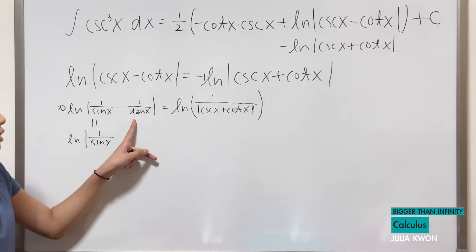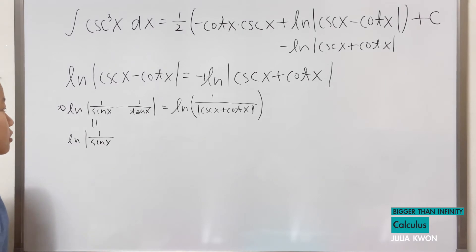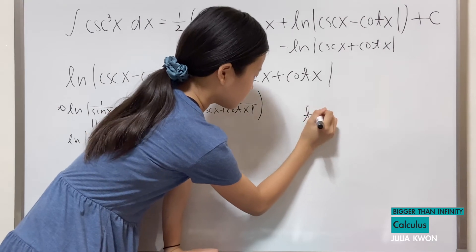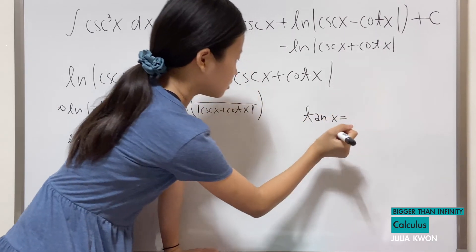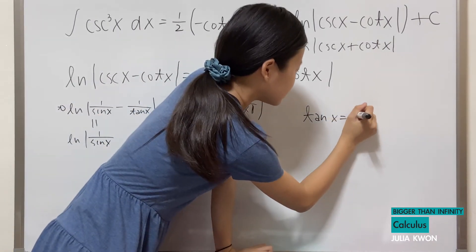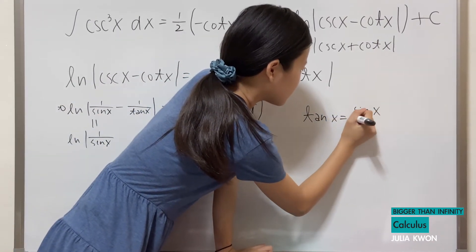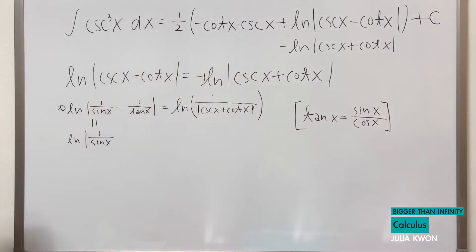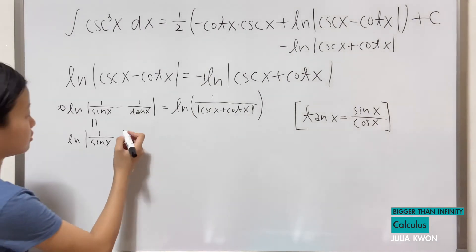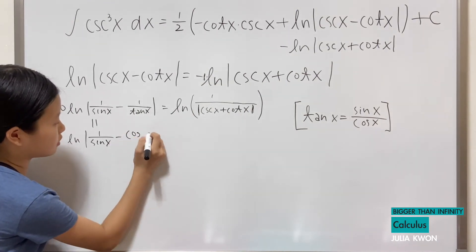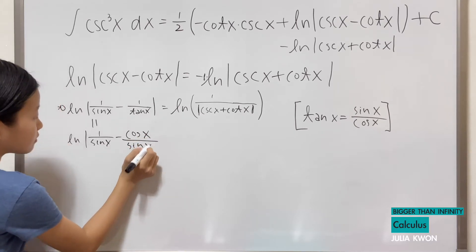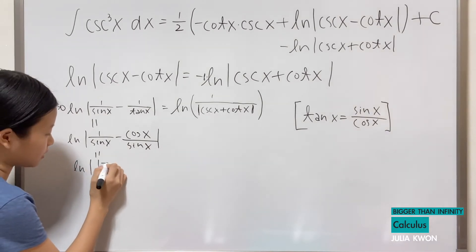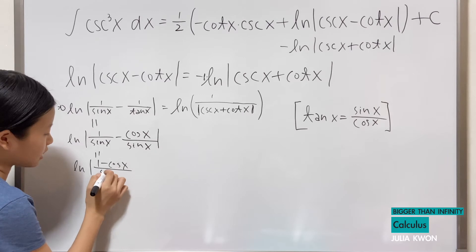We know that tangent x is equal to sine x over cosine x, so 1 over tangent x is equal to cosine x divided by sine x. That makes our expression equal to ln of the absolute value of 1 minus cosine x divided by sine x.